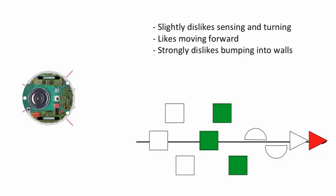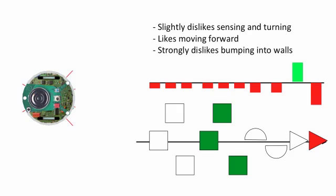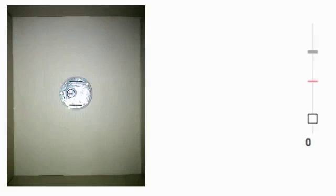Additionally, the robot has an inborn preference for moving forward, a strong inborn dislike for bumping into walls, and a slight dislike for turning and for using sensors. This histogram indicates the inborn valence of interactions, in red when negative and in green when positive.